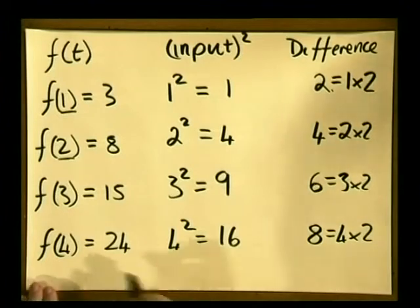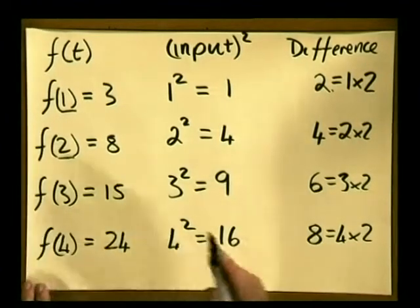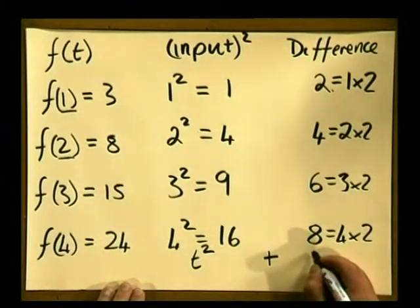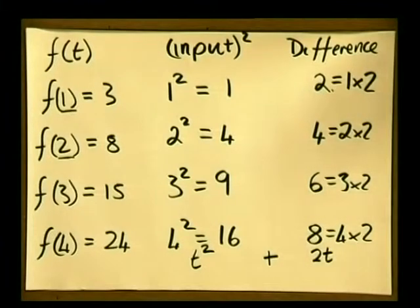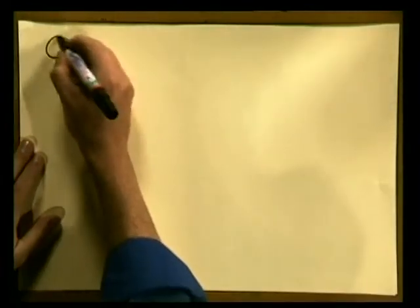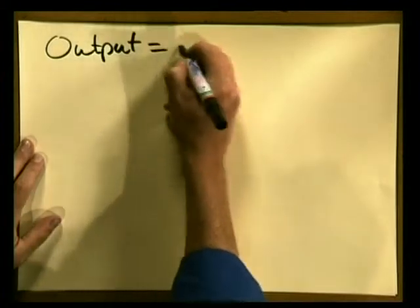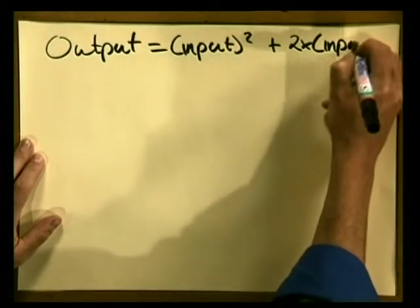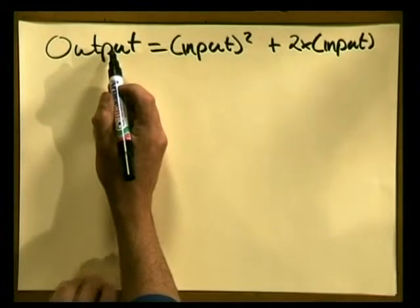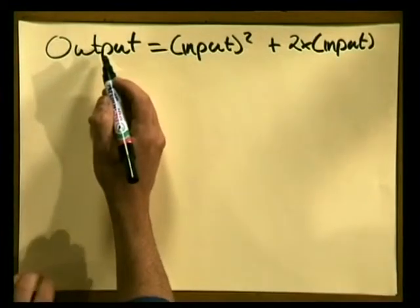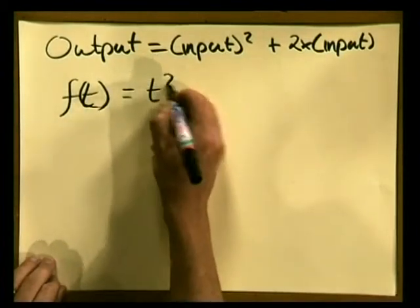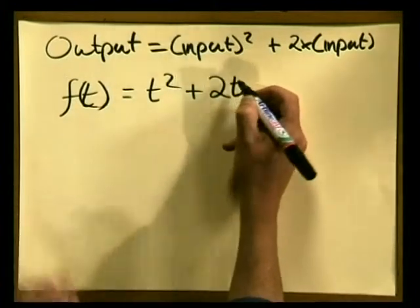As a summary, we can see that the output value, in this case 24, is generated by the input which is t squared. And then we need to add 2 times the input t. Now, let's write the formula down nice and clearly. The output is equal to the input squared plus 2 times the input. Remember, our output depends on time or the variable t. So, in terms of function notation, f of t is equal to t squared plus 2 times t.